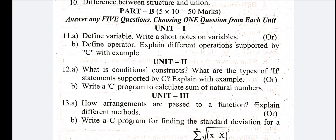Second question: define operator, explain different types of operators supported by C with example. An operator is a symbol to perform a specific task. For example, arithmetic operators: you can use plus, minus — these are arithmetic operators — divided by, modulo. Next, assignment operator is equal to, and relational operators are less than or greater than. These are the forms of operators for 10 marks.